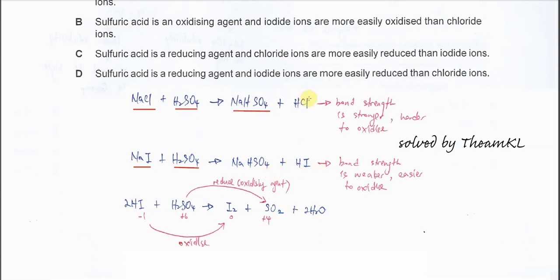If we compare HCl and HI, HCl has stronger bond energy or bond strength. Therefore it's harder to break and chloride is harder to be oxidized.